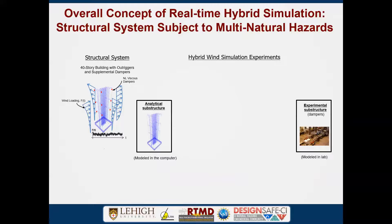Because you can't put the entire building in the lab, and contrary to popular belief, even nonlinear viscous dampers have modeling issues, we're going to put the dampers in the laboratory. We'll experimentally obtain the information for those nonlinear regions. The rest of the structure — in this case a 40-story building — will be put in the computer, primarily because we feel we can model it accurately numerically. This is called the experimental and analytical substructure.